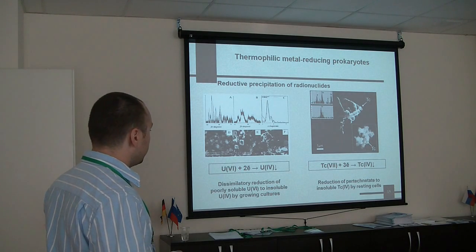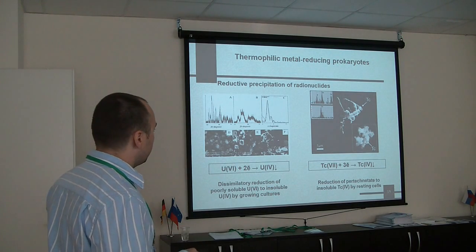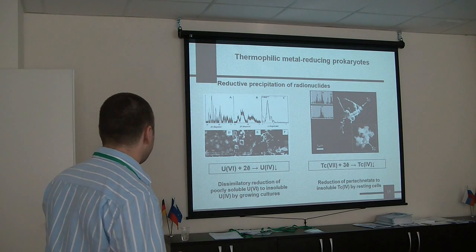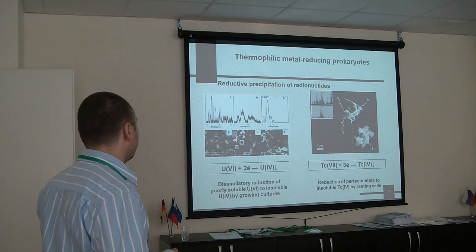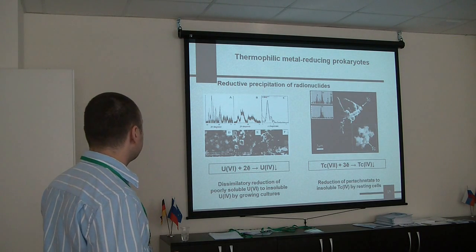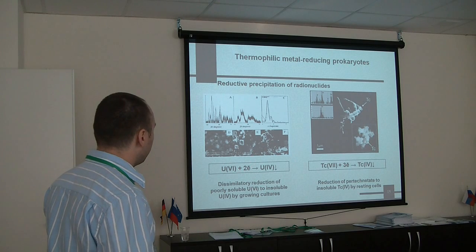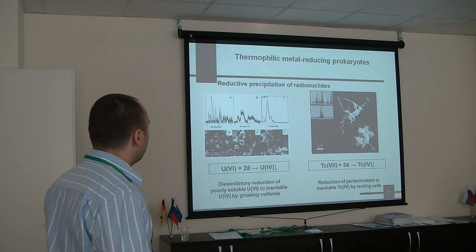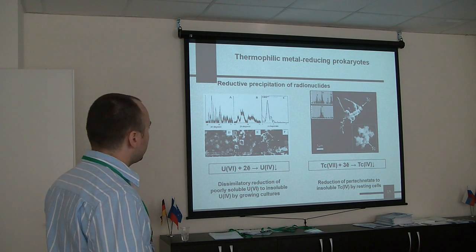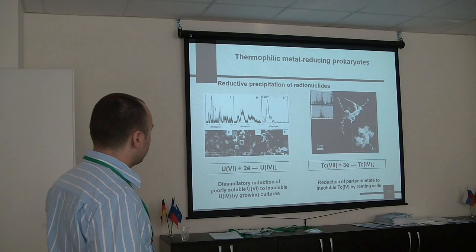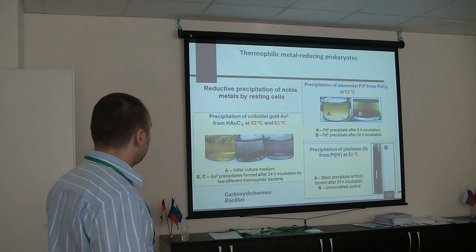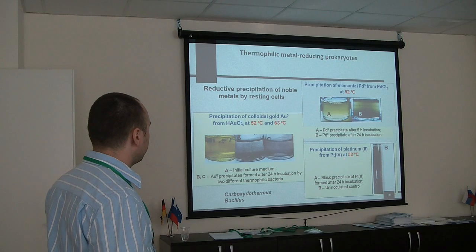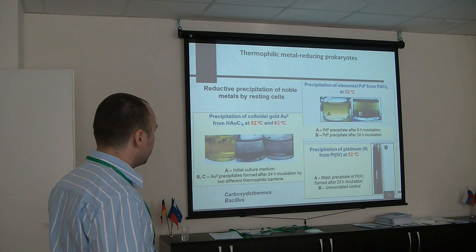Some of these organisms can reduce not only ferric iron but also radionuclides like uranium and technetium, as well as noble metals like gold, palladium, and platinum. These could be possible applications of these microorganisms.